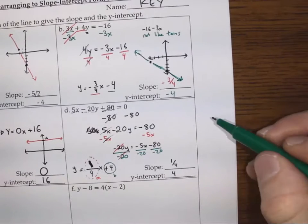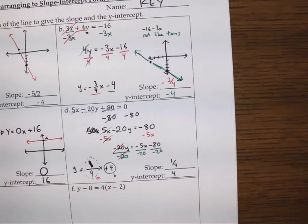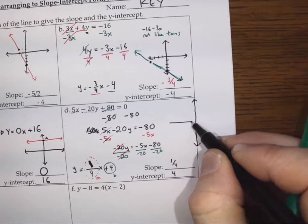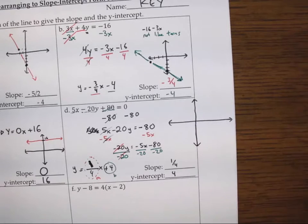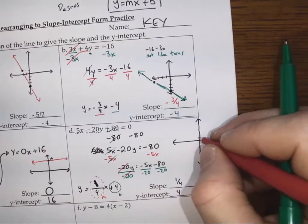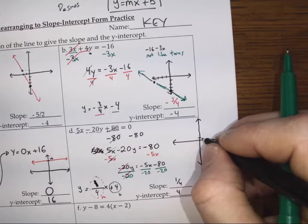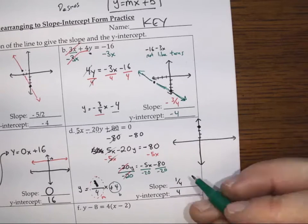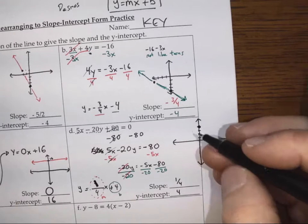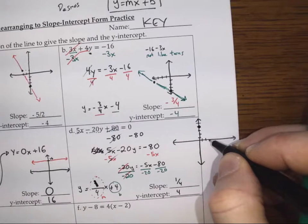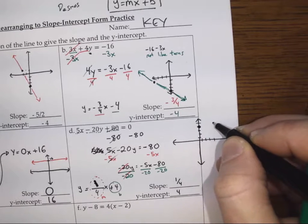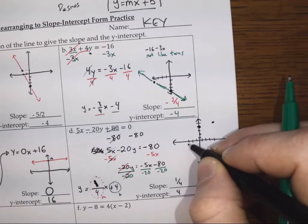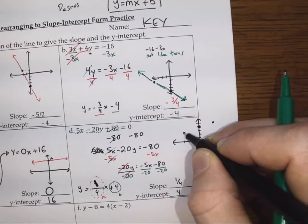I'll draw a little version of that here. The y-intercept is at 4, and we rise 1 for every 4 we run. We can also rise negative 1 and run negative 4.